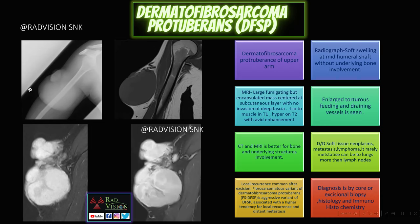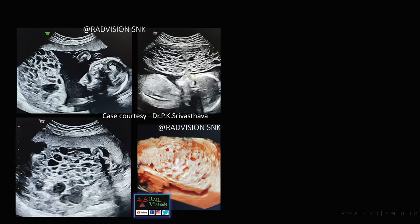Dermatofibrosarcoma protuberans, or DFSP, is a very uncommon lesion. Common differentials include soft tissue neoplasms, metastasis, and lymphoma. Local recurrence is very high after excision. One variant is the fibrosarcomatous variant of DFSP, which is aggressive with a higher tendency for recurrence. Metastasis is rare, but when it occurs, it tends to go to the lungs more than lymph nodes.